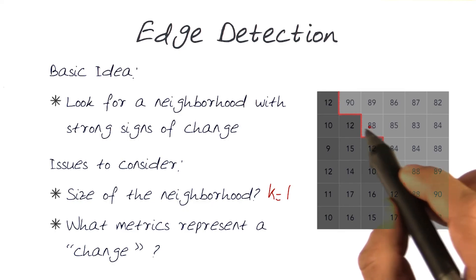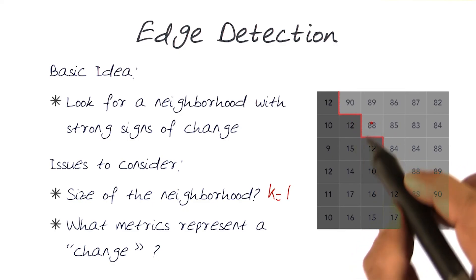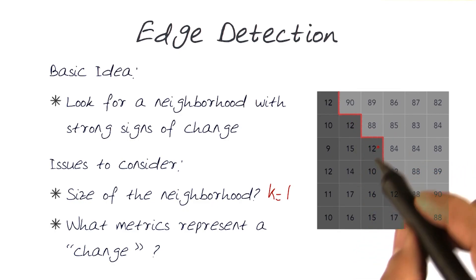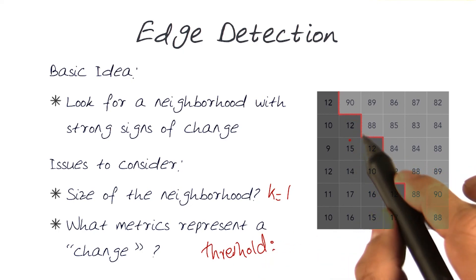Or in this case, again, about 76. So all of those variations are much larger. So we basically came up with some sort of a threshold.